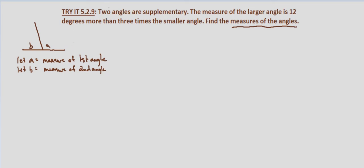So what do we know? We know that two angles are supplementary. Well that means the sum of their measures is 180 degrees. So we know that a plus b equals 180.